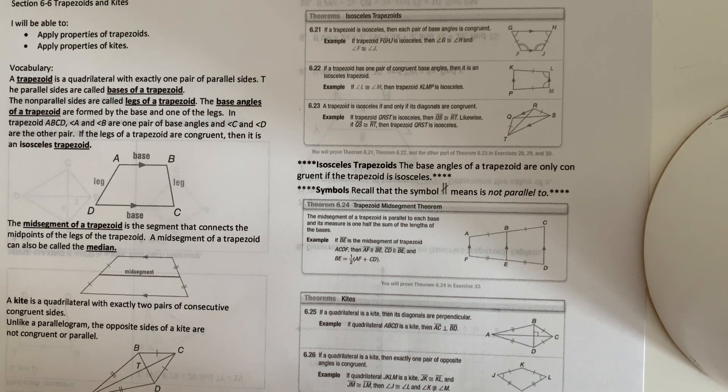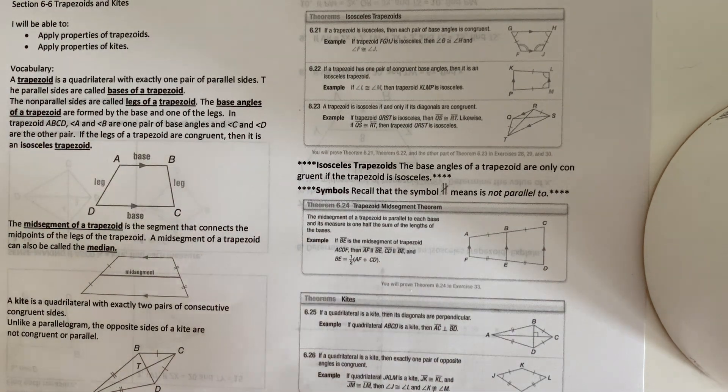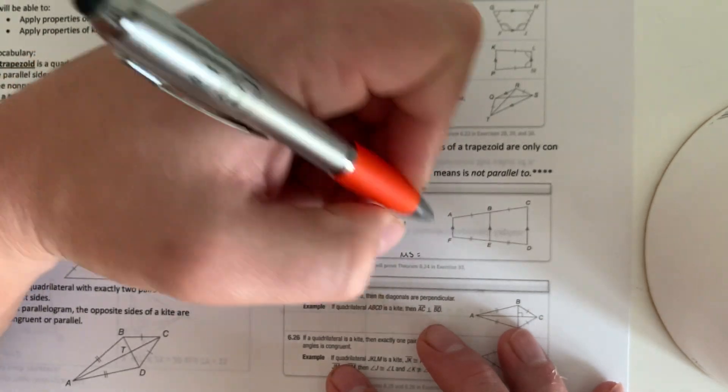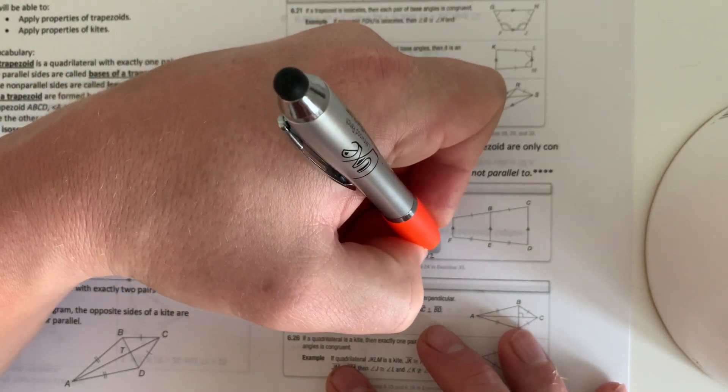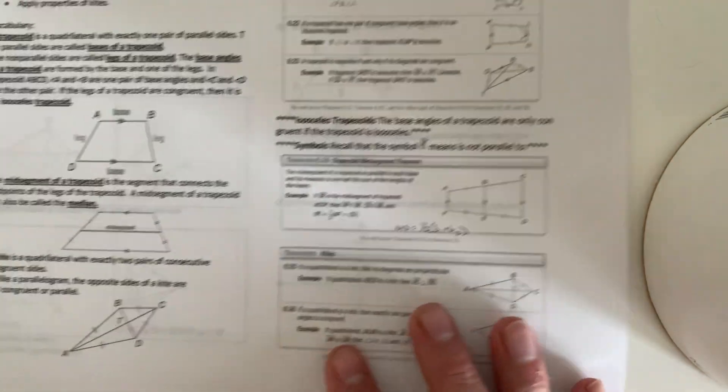And then the mid-segment theorem. The mid-segment of a trapezoid is parallel to each base and its measure is one half of the sum of the lengths of the bases. So it's BE equals one half AF plus CD. Another way to write it, I write it, the mid-segment is equal to one half base one plus base two. Just another way to write it.